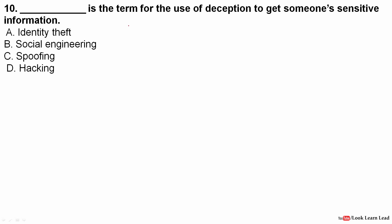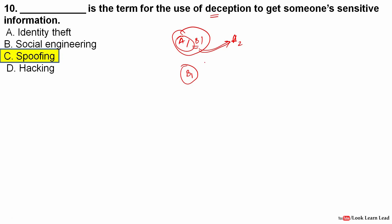Next question: Dash is the term for using deception to get someone's sensitive information. For example, A1 wants information from A2 but is not authorized. A2 can only give info to B1, so A1 disguises itself as B1 to get the information from A2. This is known as spoofing — specifically IP spoofing, where one system replicates another system's IP address to obtain sensitive information.